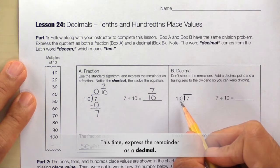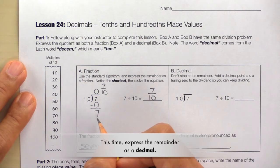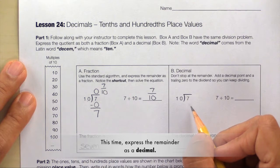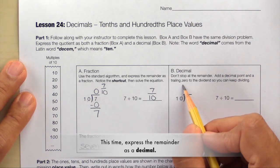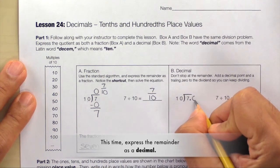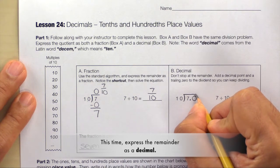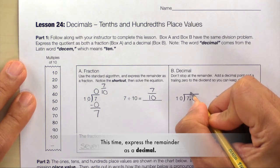Let's move over to Box B. Here we have 7 divided by 10 which is the same problem that we had earlier. So we will have a remainder. Instead of stopping at the remainder though we're going to add a decimal point and a trailing 0 to the dividend so that we can keep dividing. Here's a decimal point and the trailing 0. Don't forget to write this decimal point in the quotient as well.